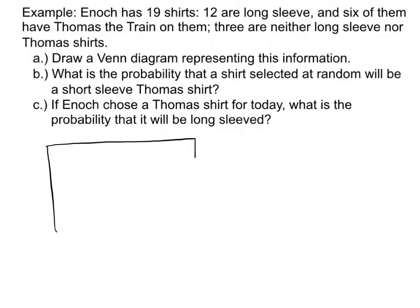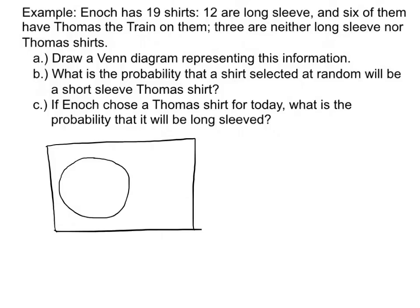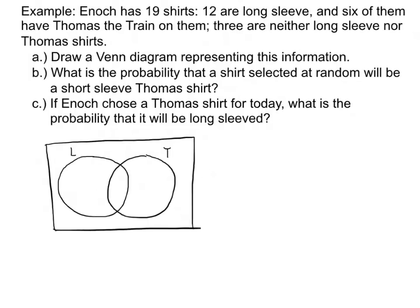We start by setting up the Venn diagram with one circle representing long-sleeve and the other representing Thomas. There were 19 objects total, so we label that outside. 12 goes outside the long-sleeve circle, and 6 goes outside the Thomas circle. Since 3 are neither long-sleeved nor Thomas, that 3 goes in the outside section — outside both circles.